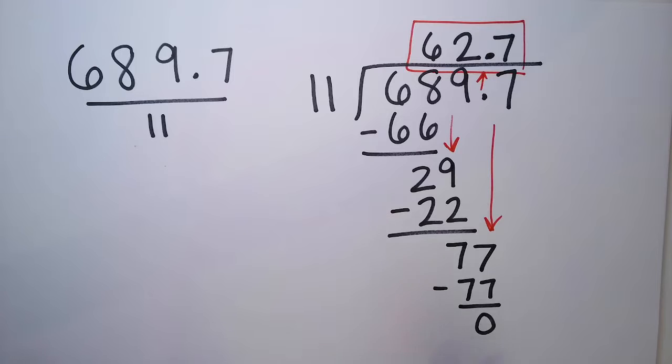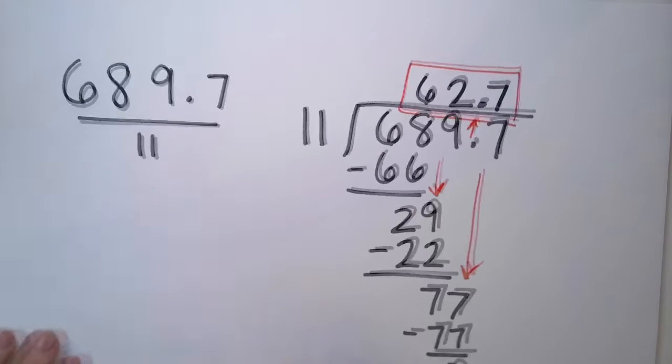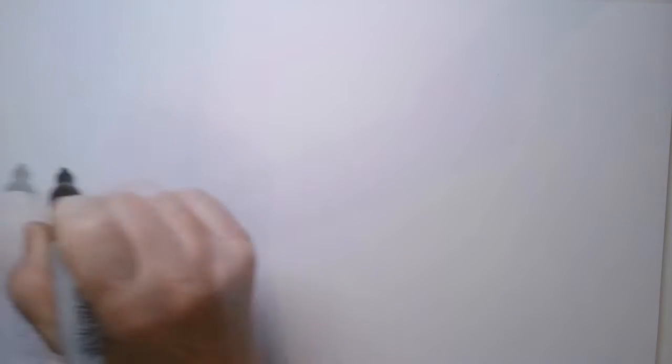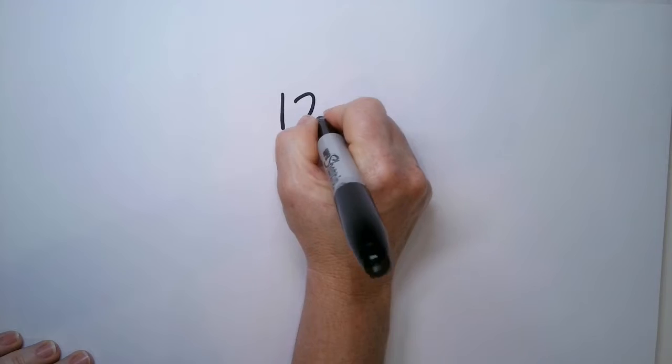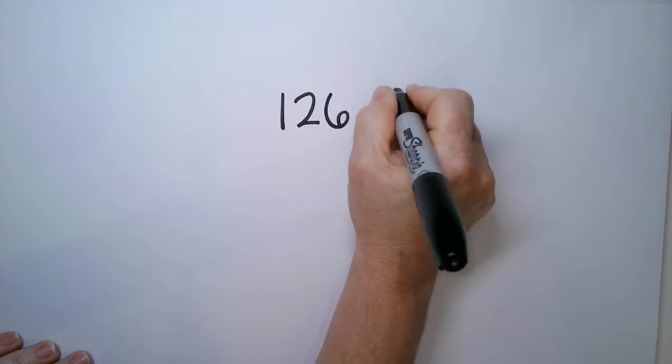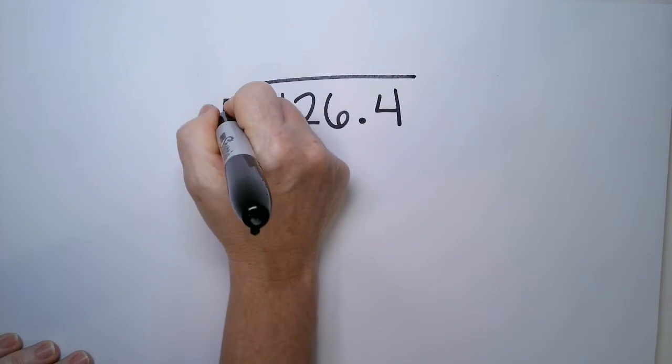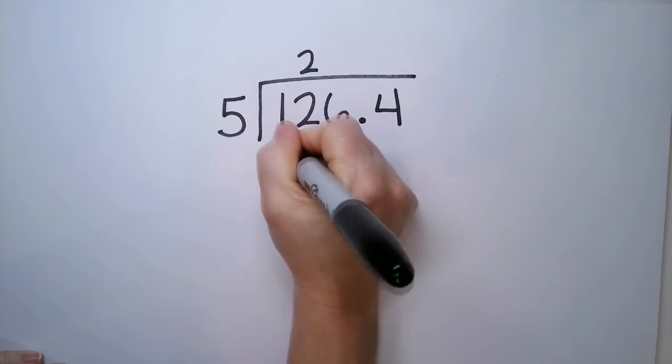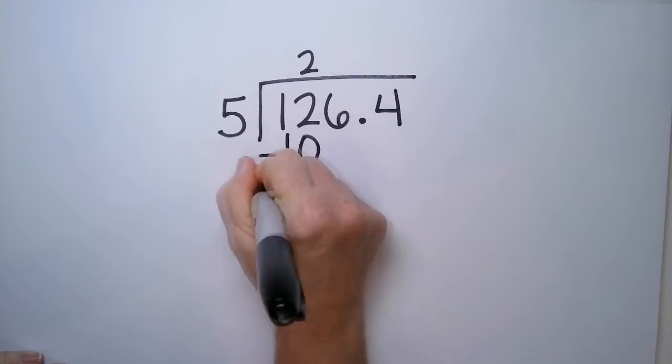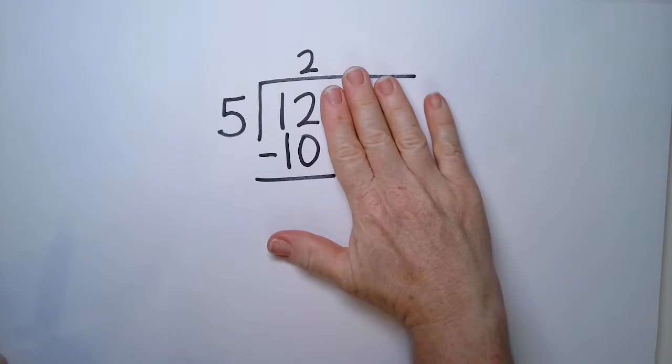So what happens if we don't have a zero for a remainder? Should we take a look at that? Here's a problem: 126.4, and we're going to divide that by 5. So 5 goes into 12 two times. 2 times 5 is 10, and then we're just taking the difference of these two.